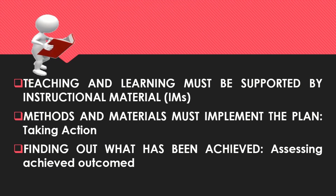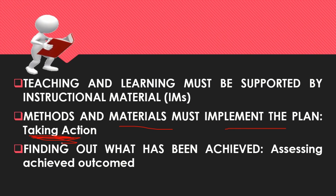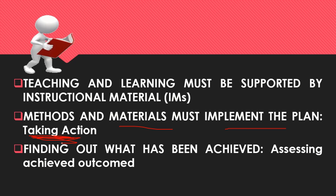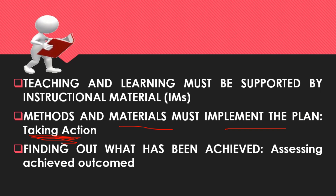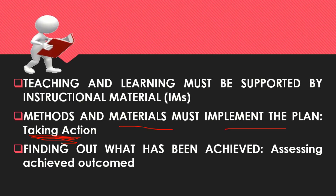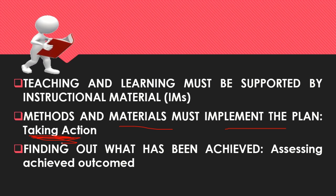Methods and materials must implement the plan and involve taking action. The last part is finding out what has been achieved — assessing the achieved outcomes. At the end of the activity, the teacher finds out if the intended learning outcomes have been converted into achieved learning outcomes, or ALO. Tests and other tools are utilized to identify what knowledge, understanding, and performance are demonstrated by learners. What has been taught should be measured.